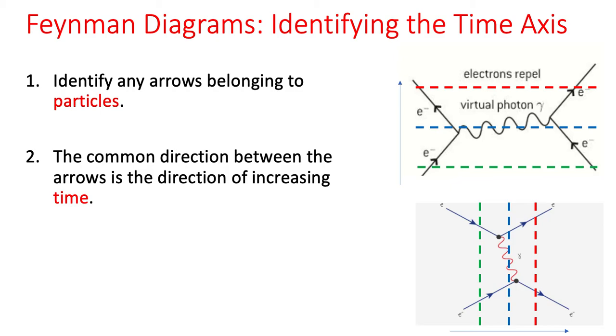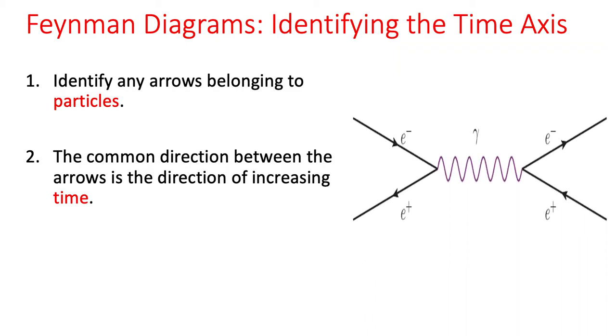The key to that is knowing where time is and how it's increasing. We're going to look at another example now. Here's a much more complicated process that might look almost identical to what we did before. The difference here is we're dealing with particles and antiparticles - fermions and antifermions.